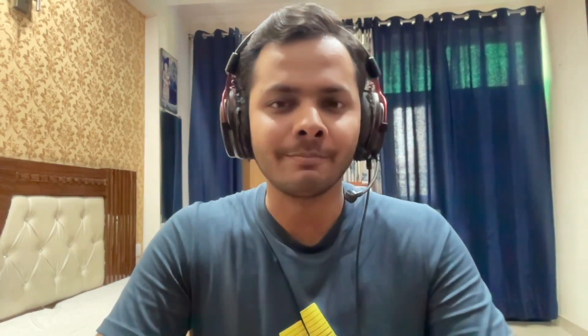We all know how to compute the depth of a node while doing DFS. If there's a forward edge from U to V, we simply assign depth[V] = depth[U] + 1. Similarly, computing low[U] is not hard at all. The back edge that connects the subtree of U to the node with the smallest depth will either have U as one of its endpoints or some node in the strict subtree of U. So low[U] will either be the minimum depth of a node V such that there's a back edge from U to V, or the minimum value of low[V] such that V is a child of U in the DFS tree — and that is how the algorithm works.